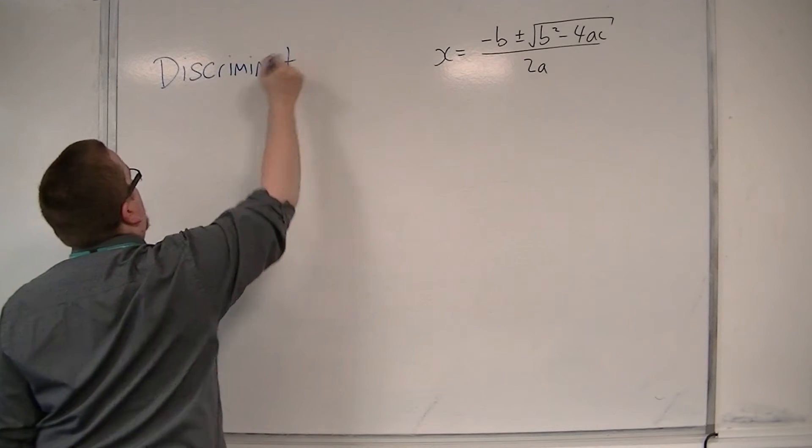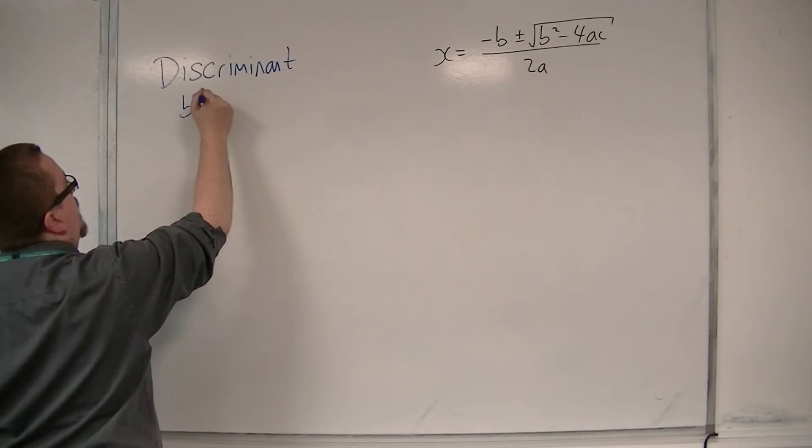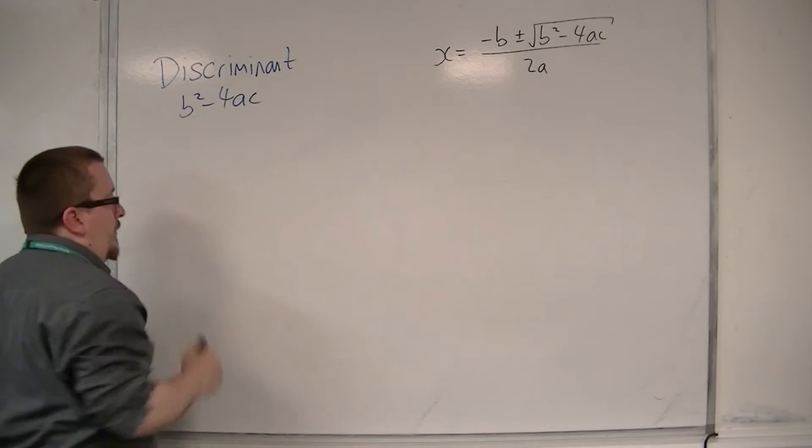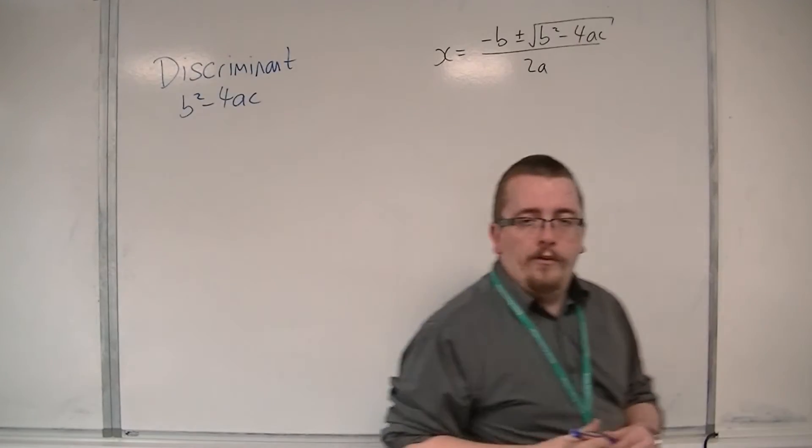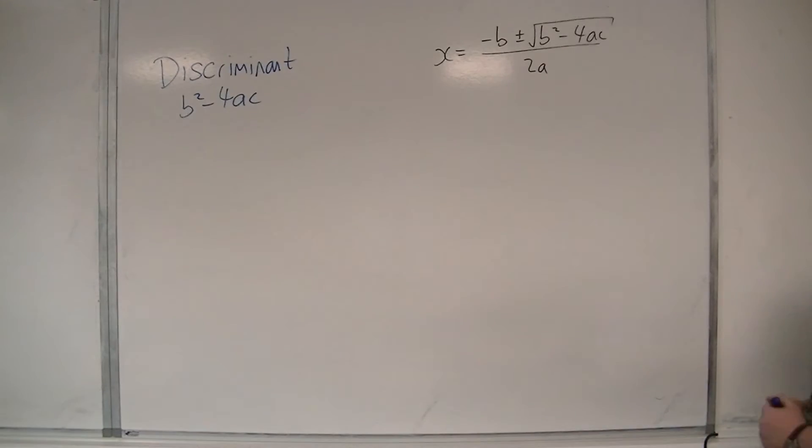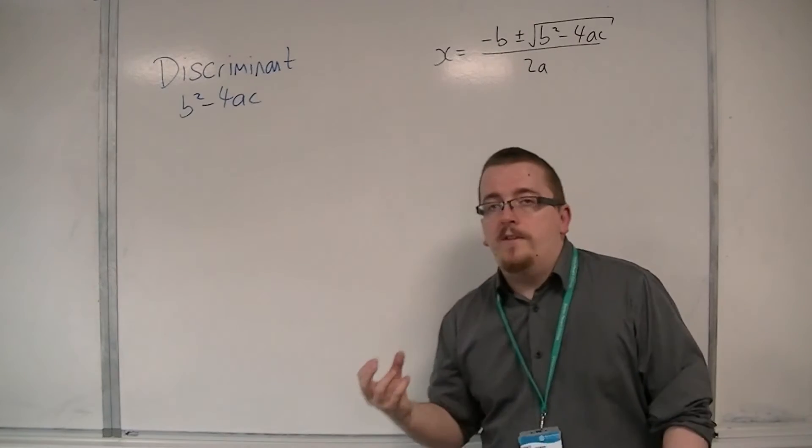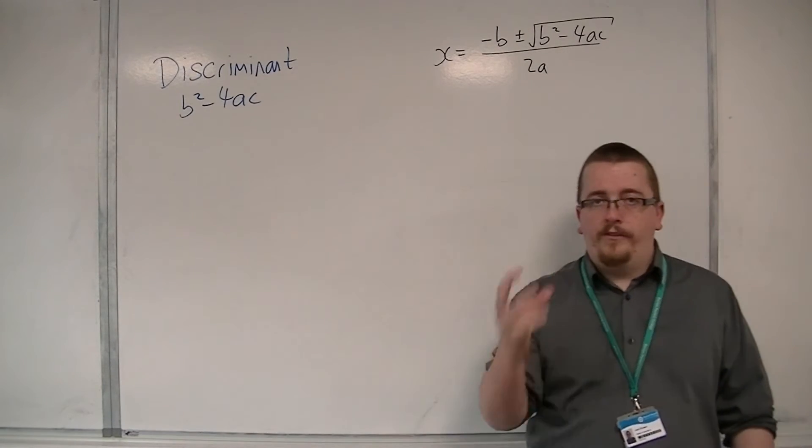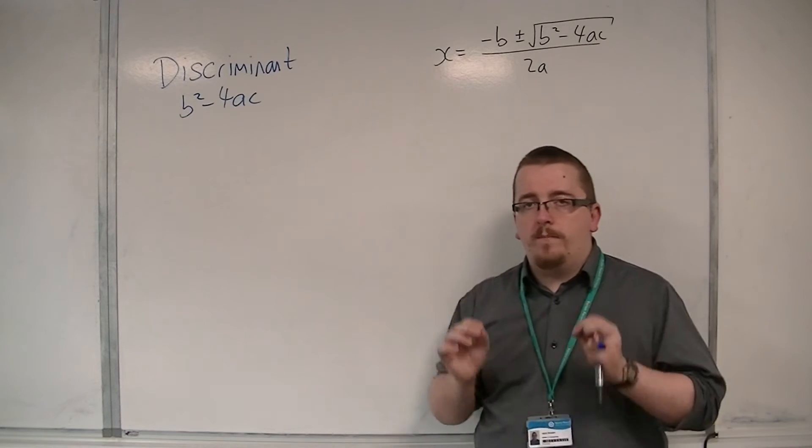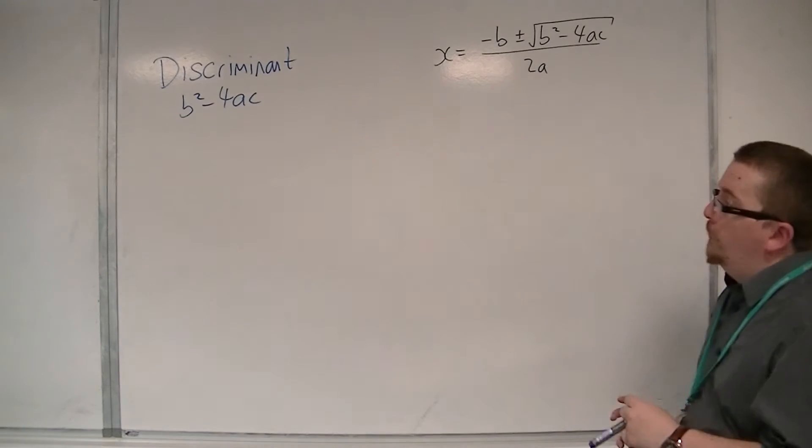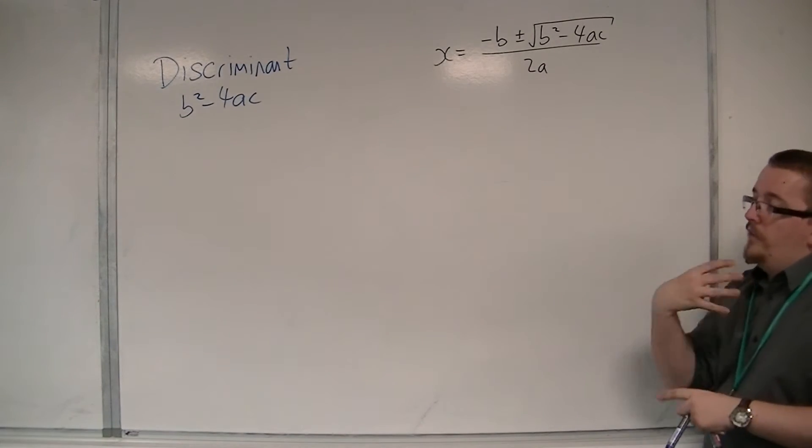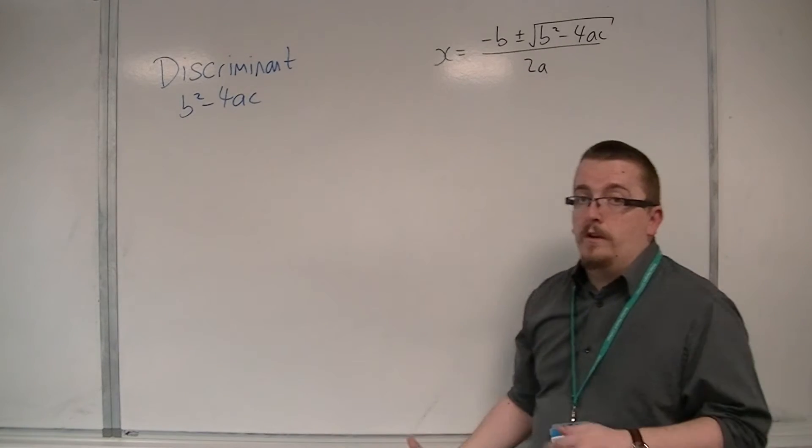You can think of it as discriminating between quadratics as to whether they will have roots or not. So the discriminant is the b² - 4ac section of the quadratic formula. And it is incredibly important in solving problems that are going to be coming up in future videos.